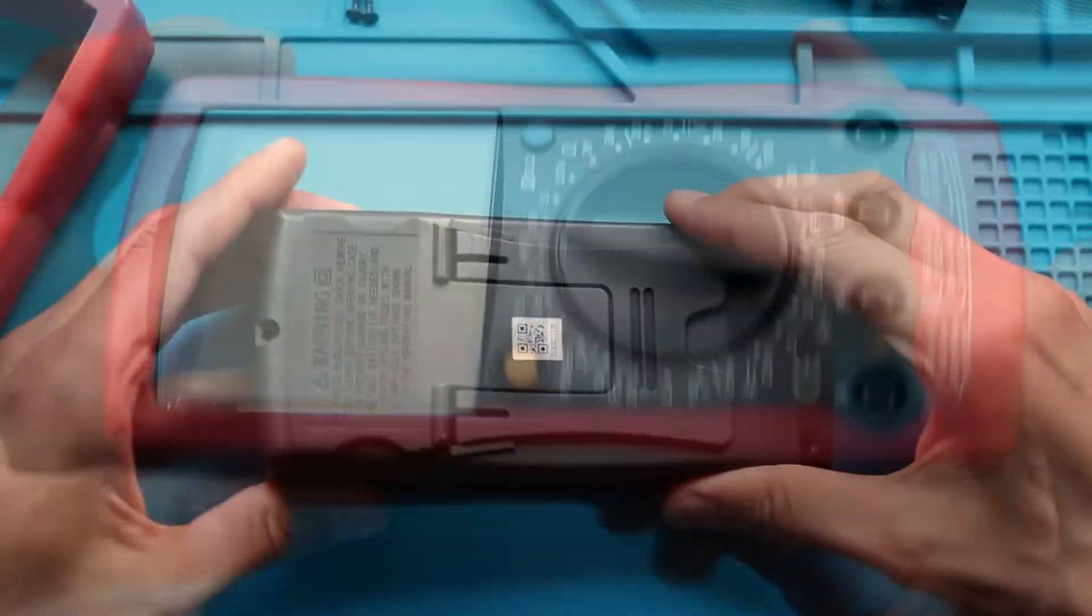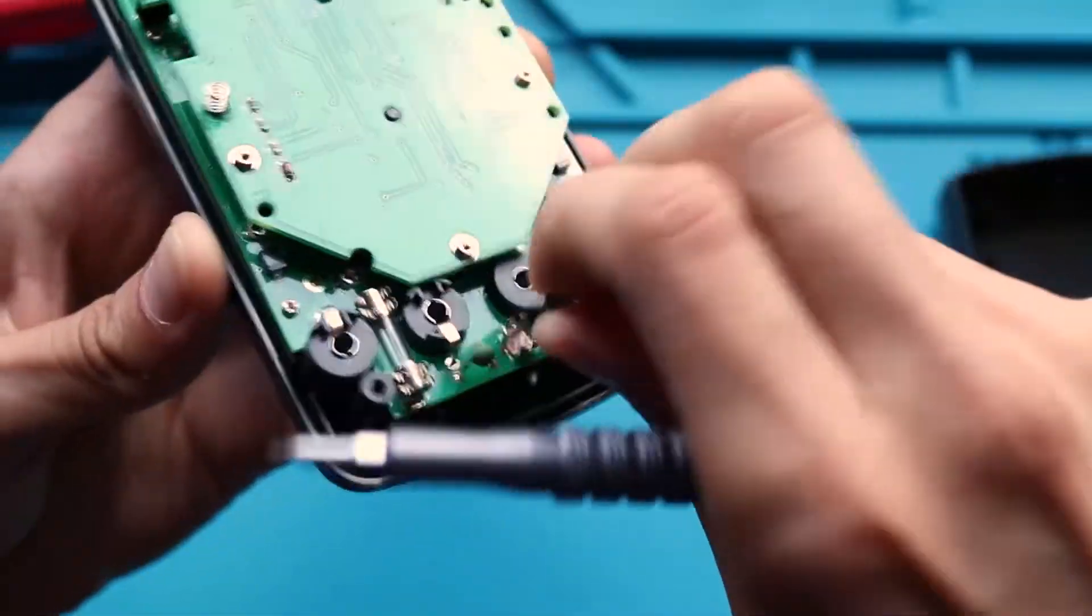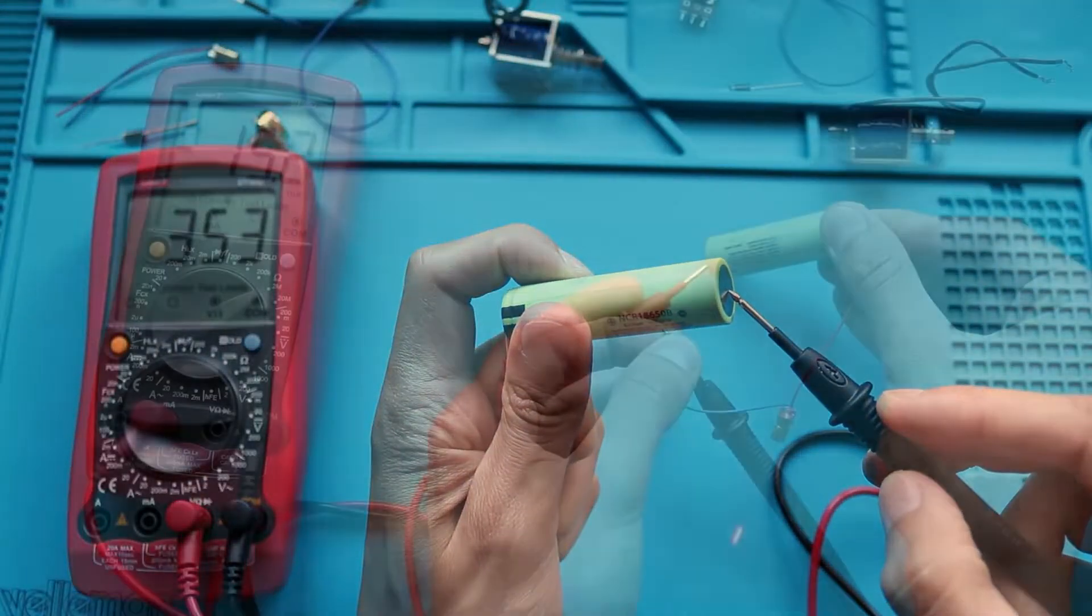Today we will look at a multimeter, how to change its battery and fuse, and how to measure component parameters such as voltage, current, and nominal values.